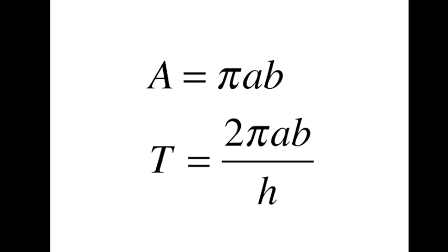Knowing that the area of an ellipse is equal to π times a times b, we can then substitute that into our period equation to get T equals 2πab divided by h, where a and b are the major and minor axes.